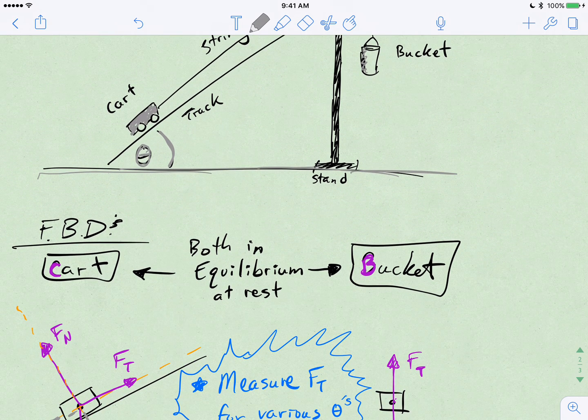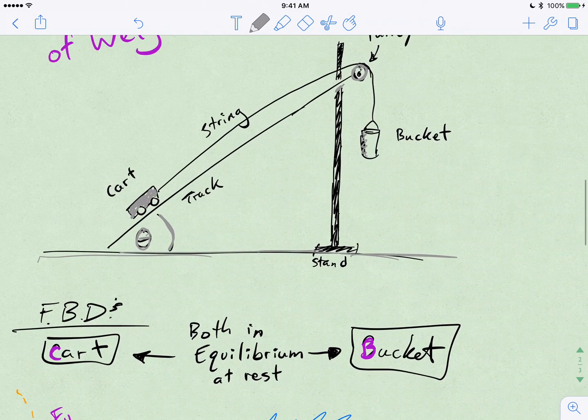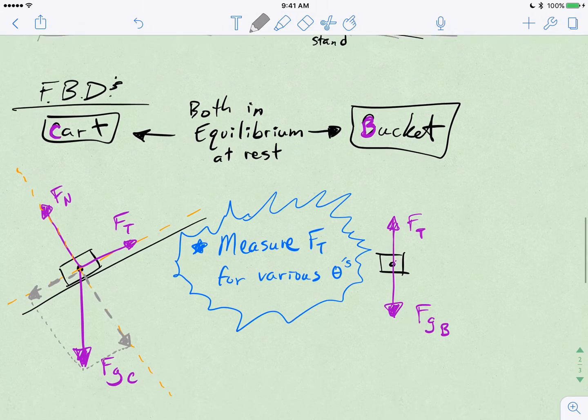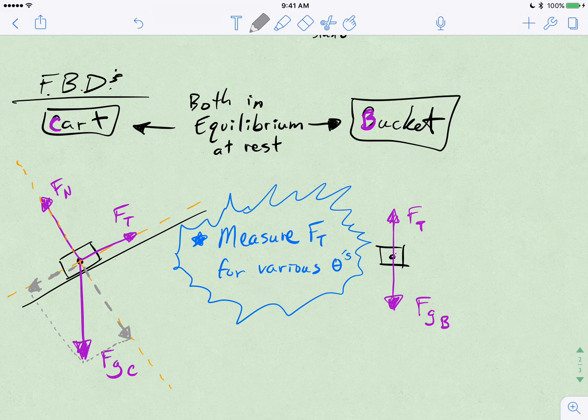Now, we're going to do free body diagrams for the cart and for the bucket as if they're two separate objects. You could also work with them as a single system of two masses connected by that string. But let's look at them as two separate objects. Both these objects are in equilibrium at rest, and that means that the ups have to equal the downs, and the lefts have to equal the rights.